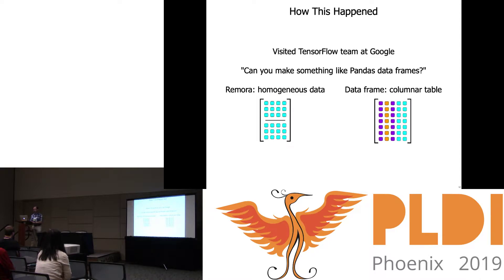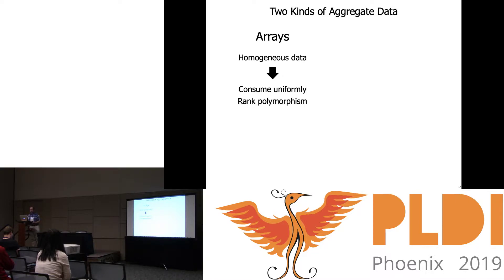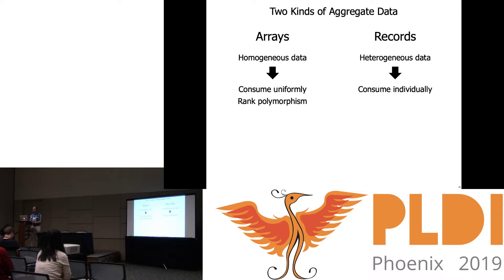You can do this if you pick apart the data frame into two different notions of aggregate data. The first is arrays — these are homogeneous data, which means you consume the elements uniformly; this is what rank polymorphism is for. Records are a foundational type of heterogeneous data, and you consume record elements individually by projecting out whichever fields you actually care about. I was able to build in very little time a simple data frame system within the prototype of Remora that we already had.